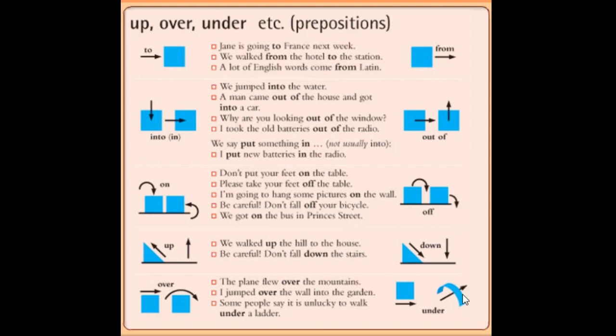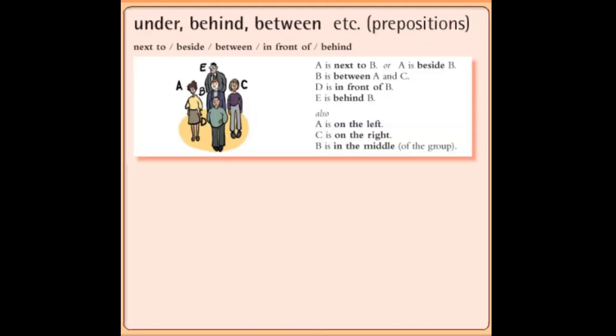So these are some simple uses of some prepositions. And here we will understand the different prepositions in sentences showing a position. We will understand the use of these prepositions here. Such as 'next to', 'beside', 'between', 'in front of', 'behind'. So there are five persons you can say in the picture: A, B, C, D, and E.